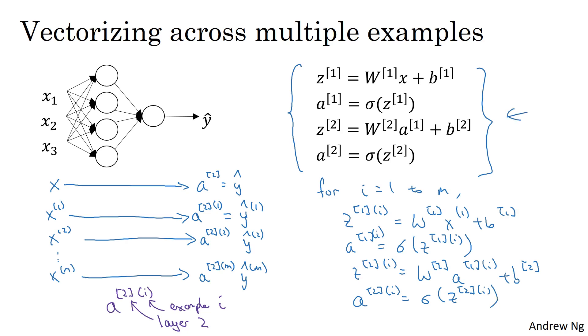So it's basically these four equations on top, but adding the superscript round bracket i to all the variables that depend on the training examples. So adding the superscript round bracket i to x, z, and a, if you want to compute all the outputs on your m training examples. What we'd like to do is vectorize this whole computation so as to get rid of this for loop.